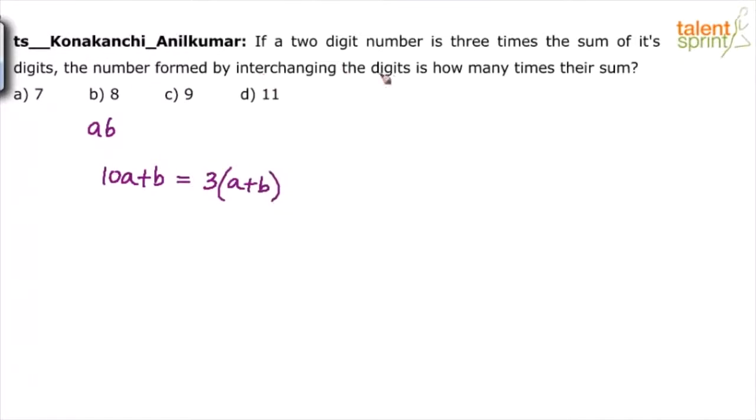Now the number formed by interchanging the digits. When you interchange the digits, what number do we get? We get BA. So basically that BA should be represented as 10B plus A. So 10B plus A is how many times their sum? I think the only equation given to us is this, so let us work on it.